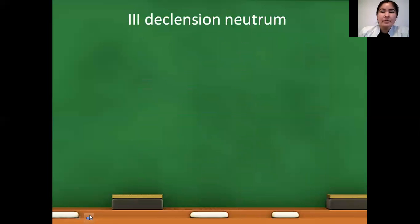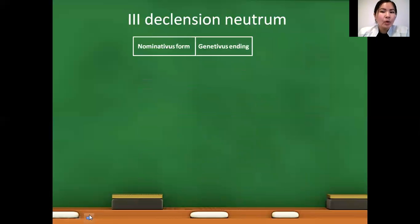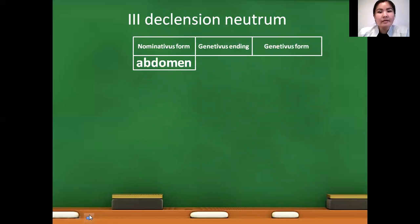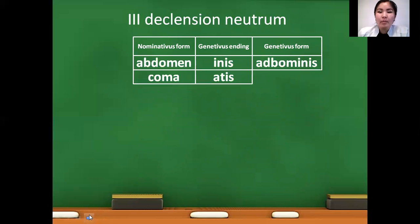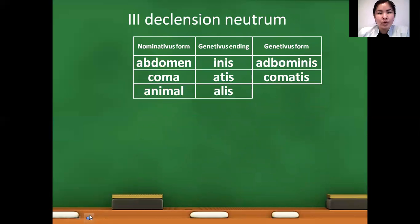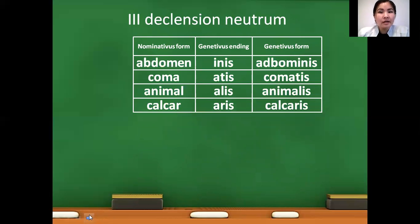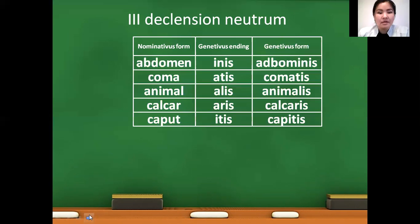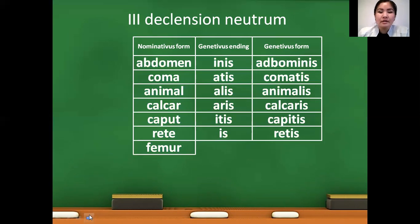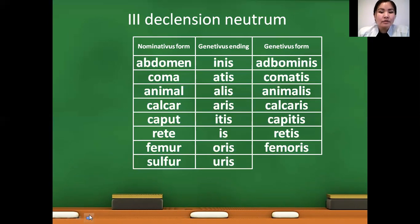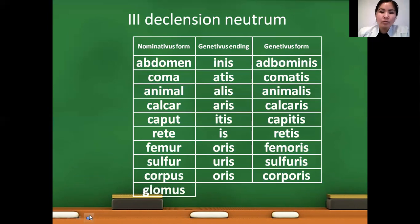In the case of third declension neuter nouns: abdomen — we use -inis, so the n ending changes to inis — abdominis. Coma — genitive form is comatis. Animal — al changes to -alis — animalis. Calcar — ar usually changes to -aris — calcaris. One exception: hepar — hepatis. Caput uses -itis — capitis. Rete — e ending changes to -is — retis. Femur — ur changes to -oris, even number of letters — femoris. Sulfur changes to -uris — sulfuris. Corpus becomes corporis. Glomus becomes glomeris.